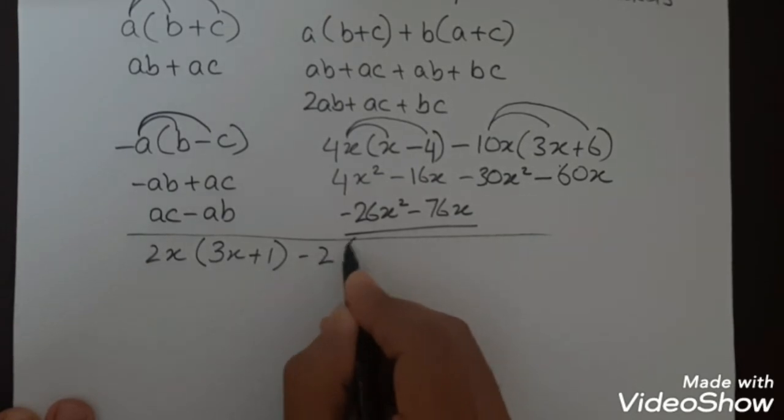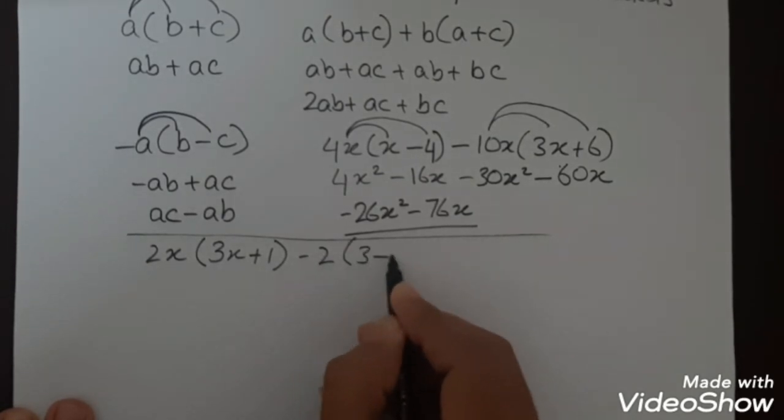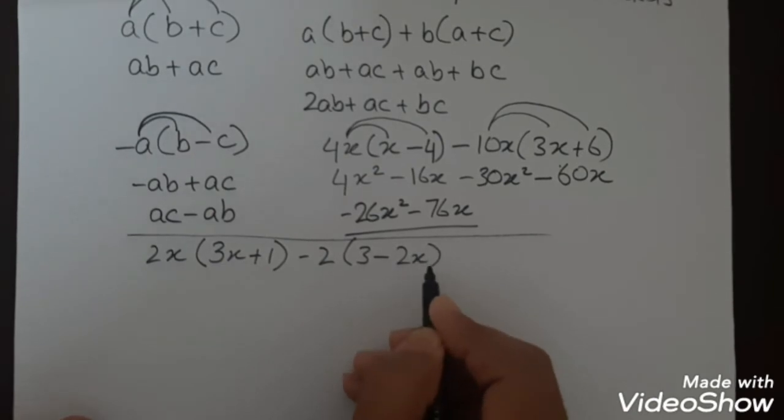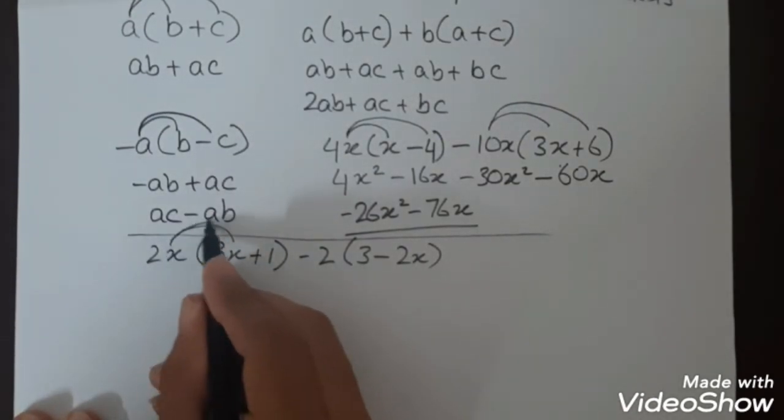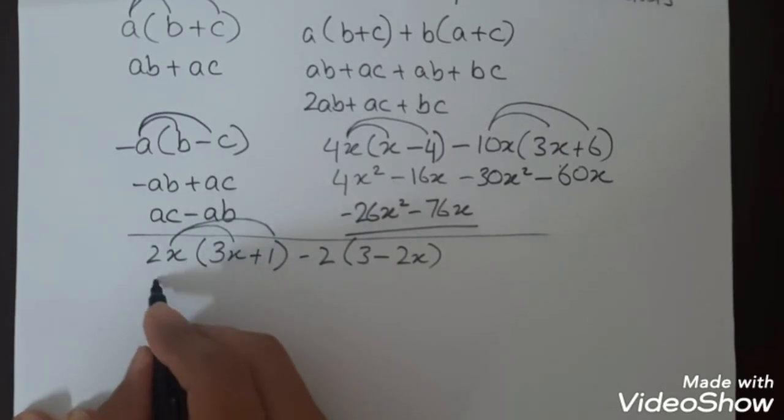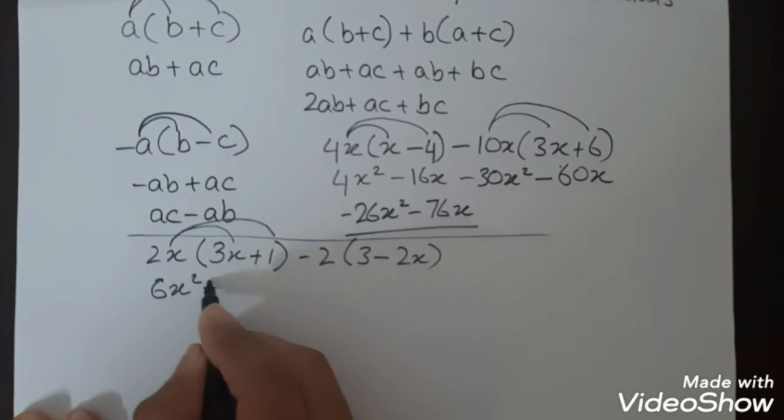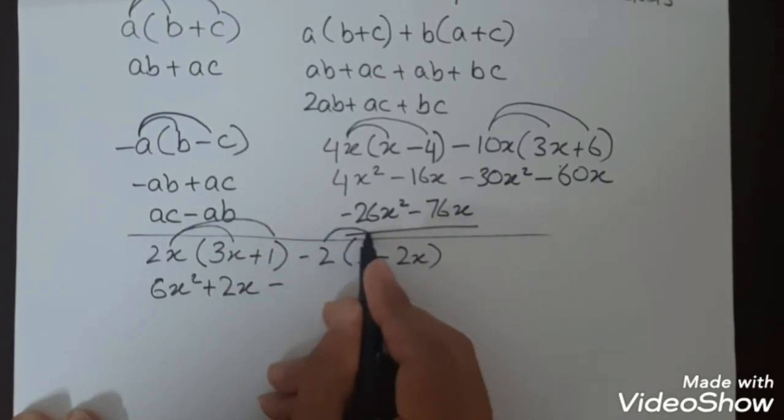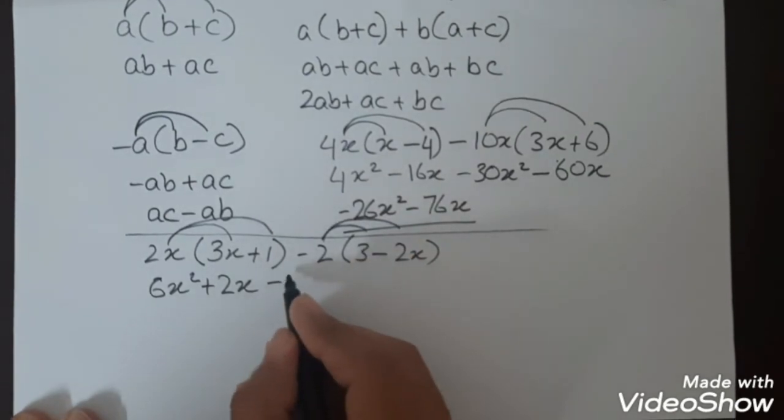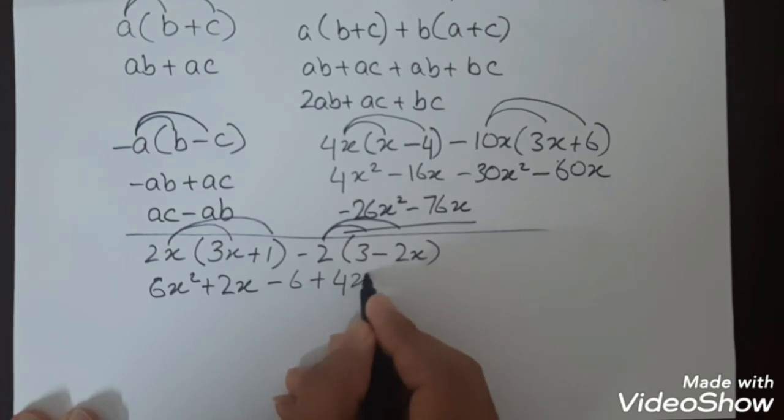Minus 2(3-2x). So we will multiply 2x by 3x and 2x by 1, which is 6x² plus 2x. Then -2 by 3 and -2 by -2x, so -6 and plus 4x.